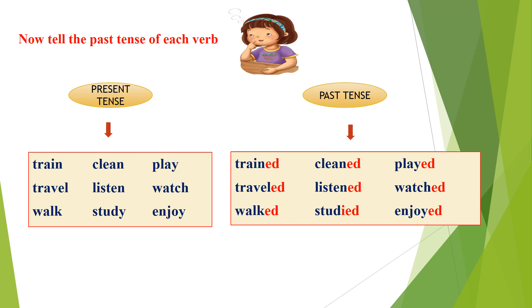Now, tell the past tense of each verb. Listen and repeat: trained, traveled, walked, cleaned, listened, studied, played, watched, enjoyed.